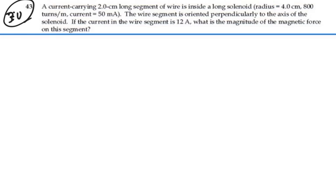800 turns per meter, current of 50 milliamps. The wire segment is oriented perpendicularly to the axis of the solenoid. If the current in the wire segment is 12 amps,